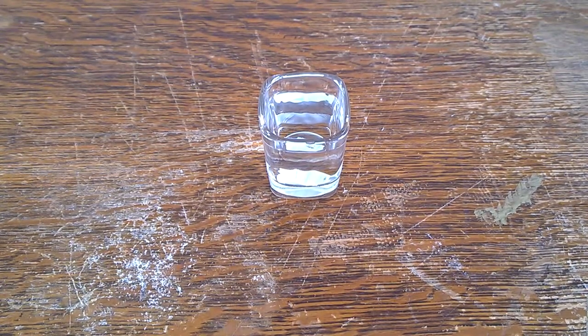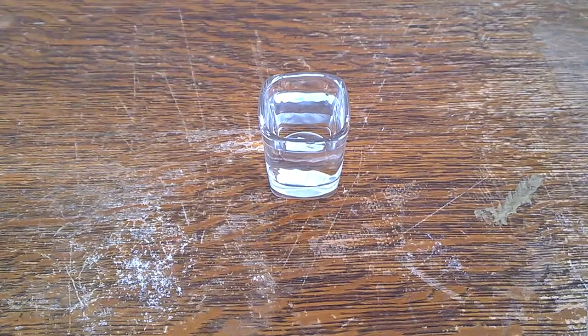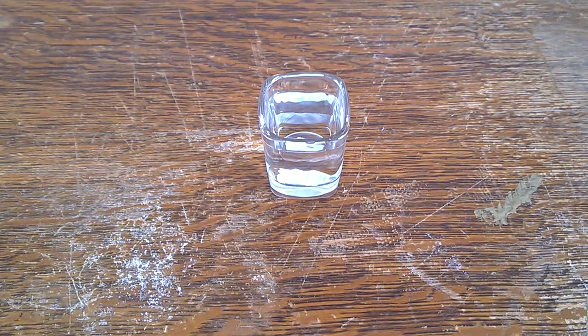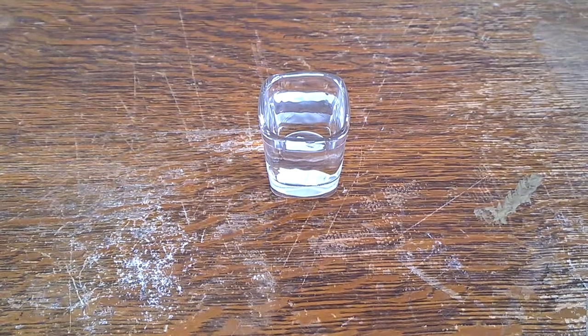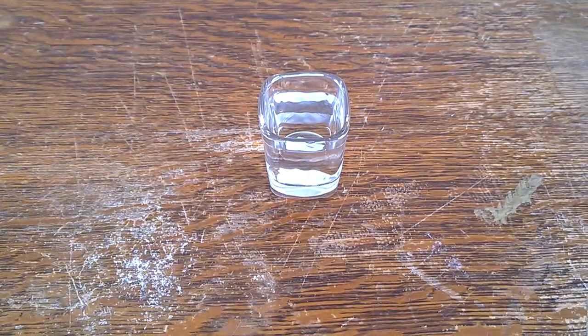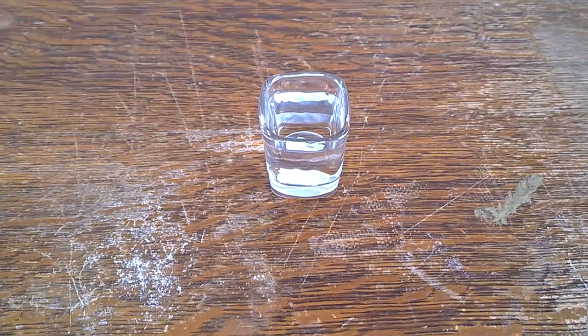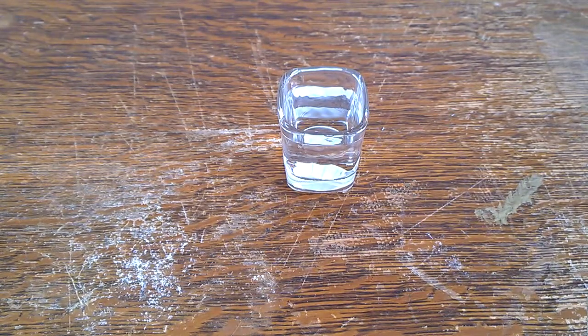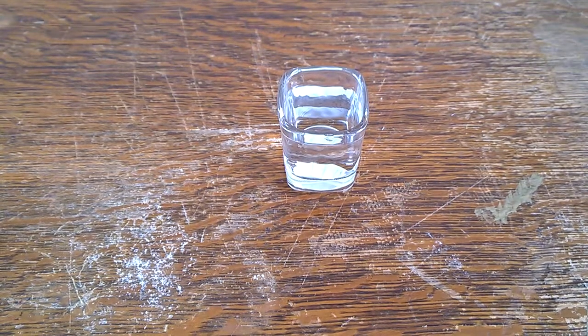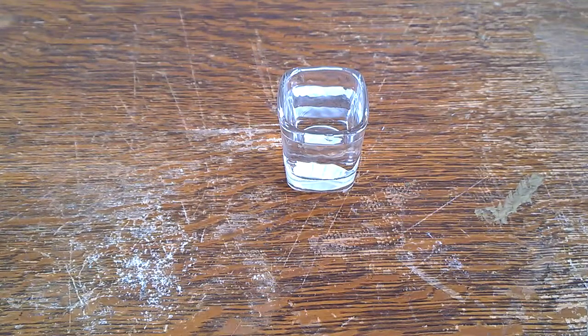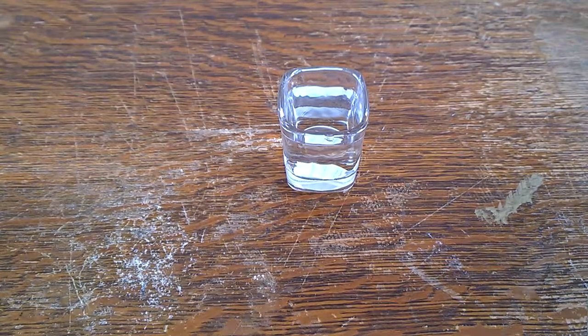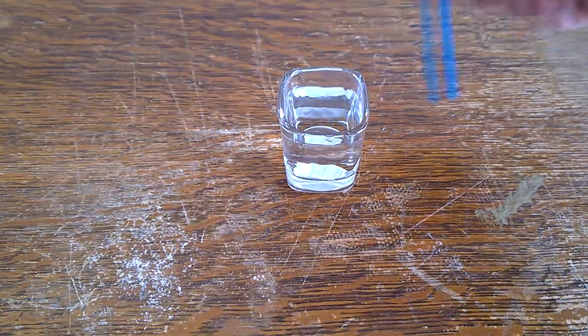This is why a diamond can scratch many other materials, most other materials, but it can also be shattered by a hammer. Because while a diamond is very hard, it's not very tough. There is no object that's 100% hard and 0% tough, or 100% tough and 0% hard. It works on something of a sliding scale.